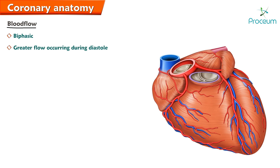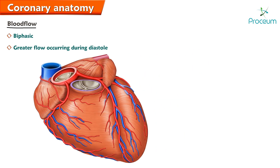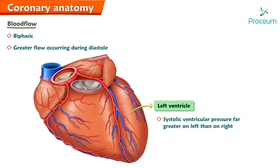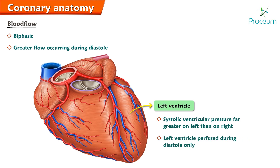Blood flow through the coronary arteries is biphasic, with greater flow occurring during diastole. The systolic ventricular pressure is far greater on the left than on the right, such that the left ventricle is essentially perfused during diastole only.